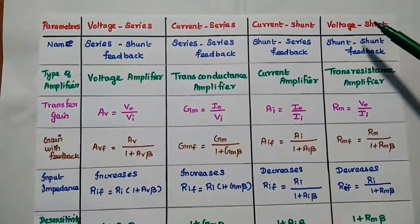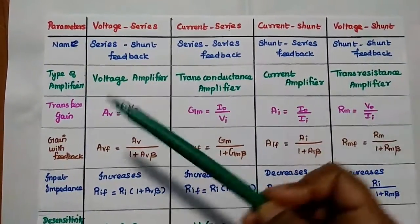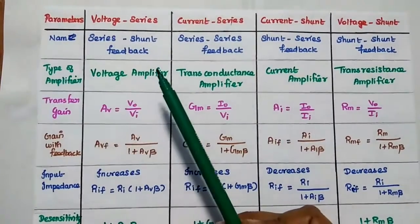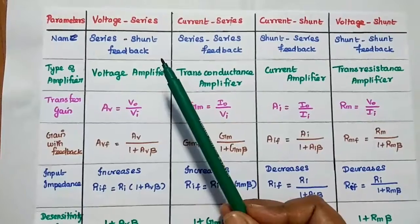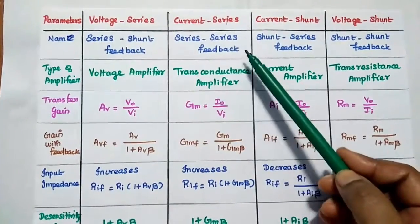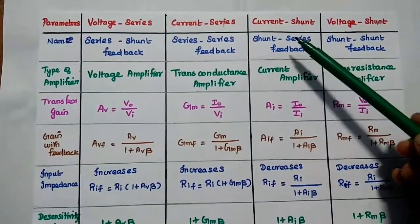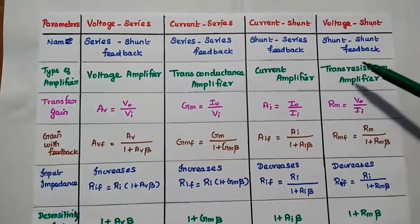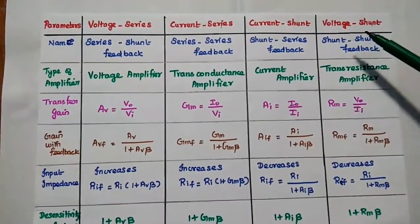Voltage shunt is represented as shunt-shunt feedback. The type of amplifier for each topology: voltage amplifier for series-shunt, transconductance amplifier for series-series, current amplifier for shunt-series feedback, and transresistance amplifier for shunt-shunt.